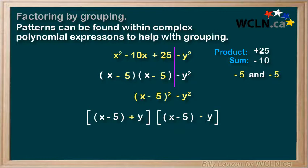And for our last step, we simplify within each square bracket. The left side will leave us x minus 5 plus y. And the right side will leave us x minus 5 minus y. It might look a little funny, but it's definitely been factored. That's it.